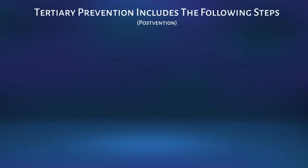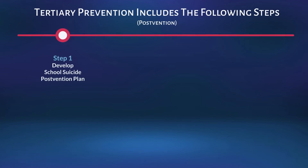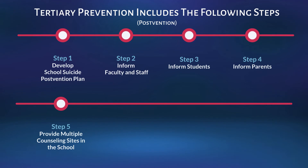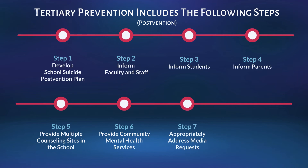Tertiary prevention includes the following steps: develop a school suicide postvention plan, inform faculty and staff, inform students, inform parents, provide multiple counseling sites in the school, provide community mental health services, appropriately address media requests, and monitor the school's ongoing emotional climate.